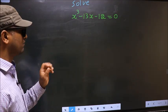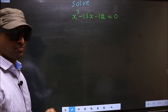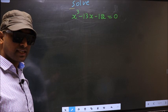Solve x cubed minus 13x minus 12 equal to 0. Here we need to solve for the values of x.